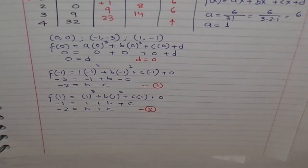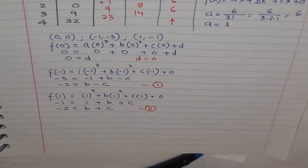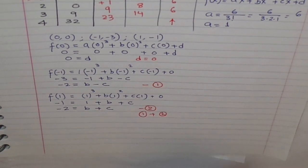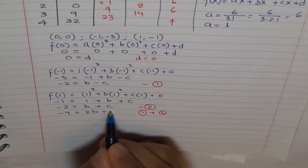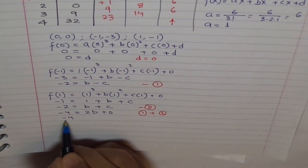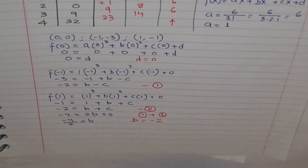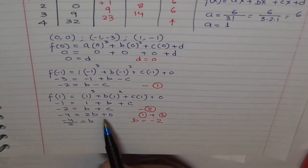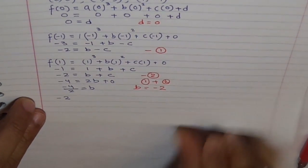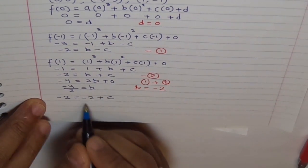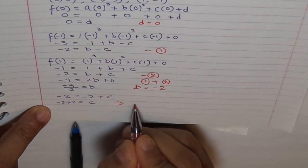So we got 2 equations with 2 variables B and C. By elimination we can easily find their values. Adding equation 1 plus equation 2: minus 2 plus minus 2 is minus 4, equals 2B, and minus C plus C is 0. So 2B equals minus 4, giving B equals minus 2. Plugging B equals minus 2 into equation 2: minus 2 equals minus 2 plus C, so minus 2 plus 2 equals C, therefore C equals 0.